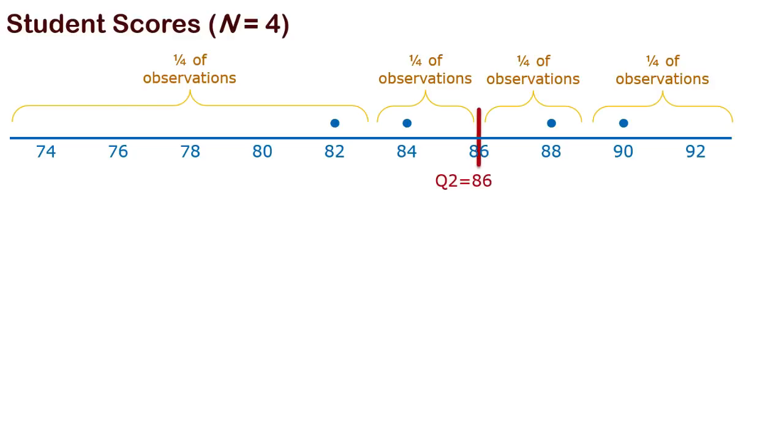So the median is the place that splits them. And you don't need to know this, but there's little rules like, if the median falls between two observations, you just evenly split that space. So an 84 and an 88, the middle point is 86. So Q2, or the median, is 86. Q1 is 83, and Q3 is 89. So those are the dividing points for four observations.